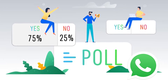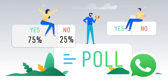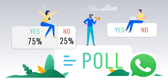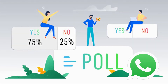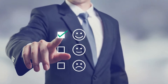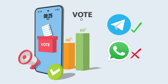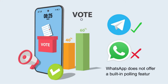Running a poll on WhatsApp is an excellent way to get everyone involved and make an effective decision on any given topic. People love participating in polls to express their opinions. Unlike Telegram, WhatsApp does not offer a built-in polling feature. However, you can use a third-party tool that can help you run a quick poll on WhatsApp.